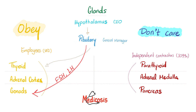FSH and LH leave the anterior pituitary and go to the gonads, telling them to secrete. If you're female, they secrete estrogen and progesterone. If you're male, they secrete testosterone and dihydrotestosterone, also known as androgens. The gonad in females is the ovary; in males, it's the testis.